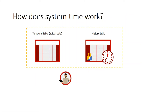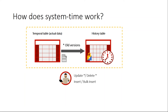Just a few more slides and we go to the demo. When you do an INSERT, the data is sent to the base table. When you do an UPDATE or DELETE, the new version of the row will be stored in the base table, but the old version — the previous state of the row — will be stored in the historical table.